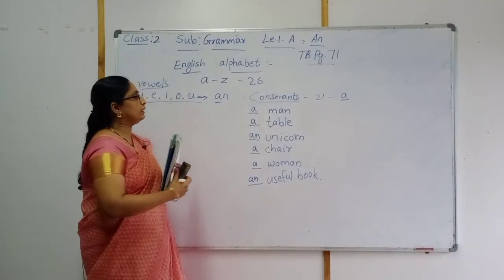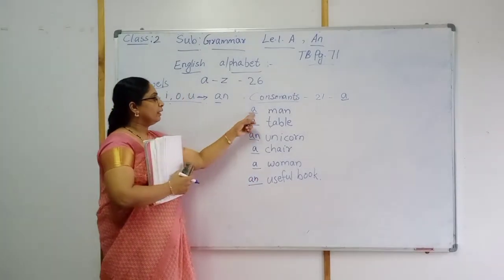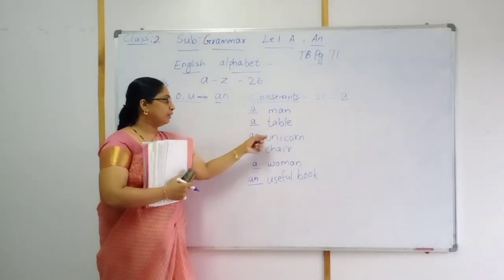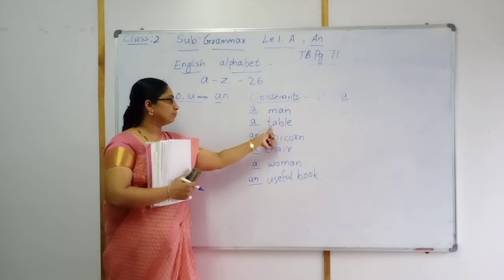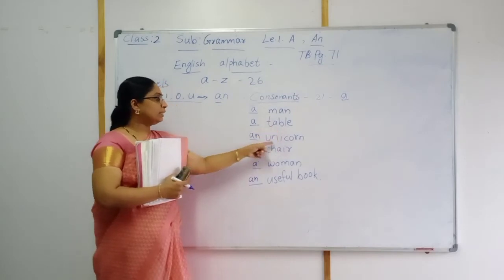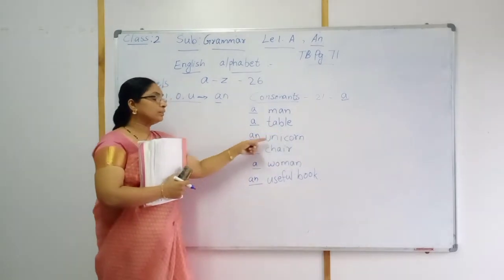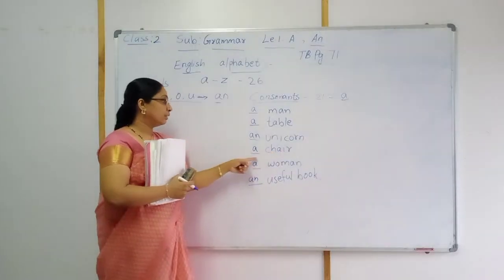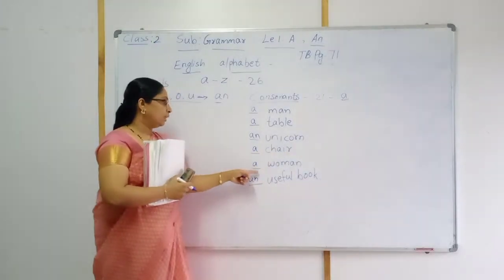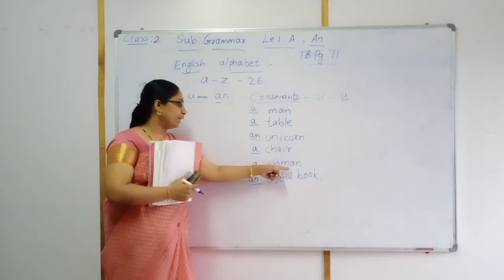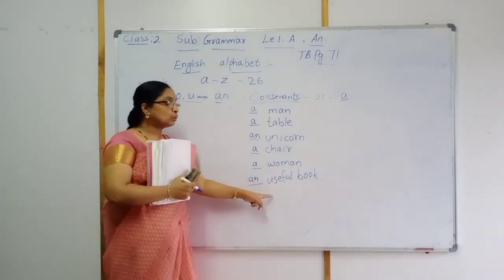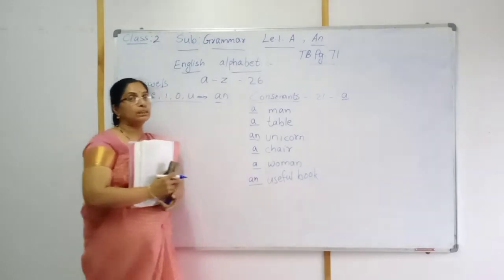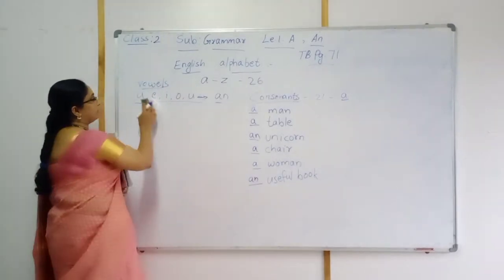Say again, children. A man. A table. An unicorn. A chair. A woman. An useful book. See more examples also, children.